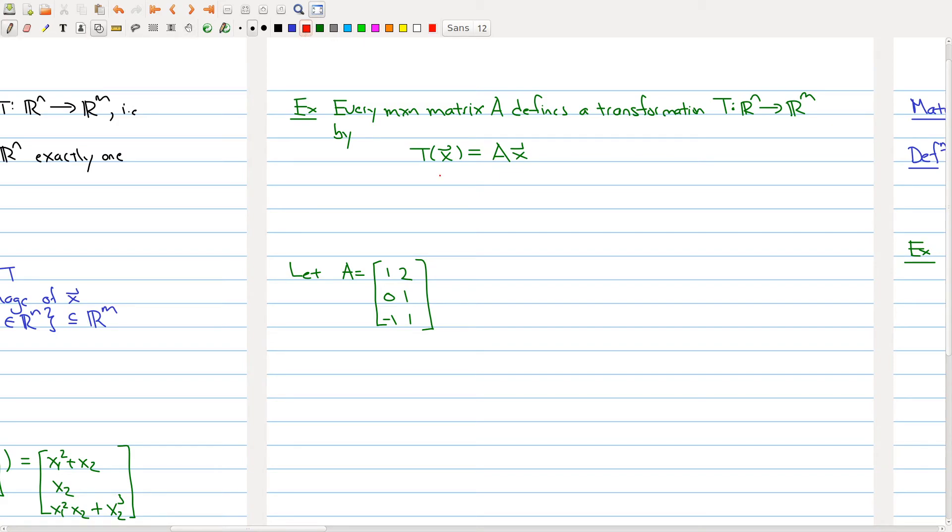And so just to make this a little bit clearer, our input is an N by 1 matrix, and the output is an M by 1 matrix after we multiply it.